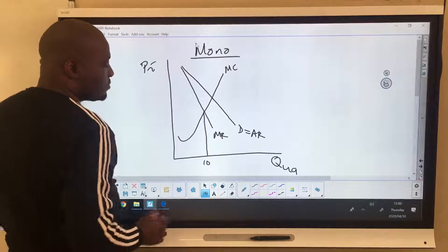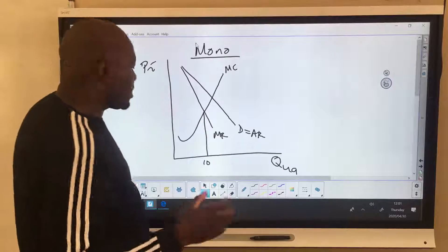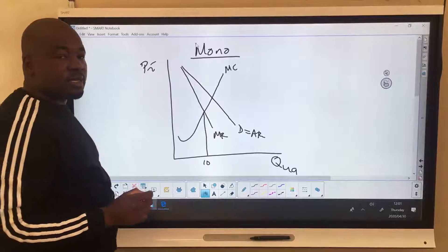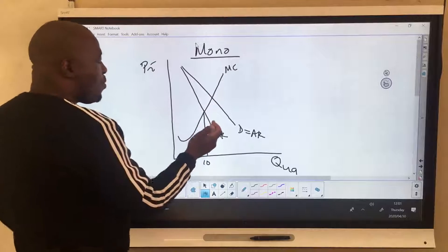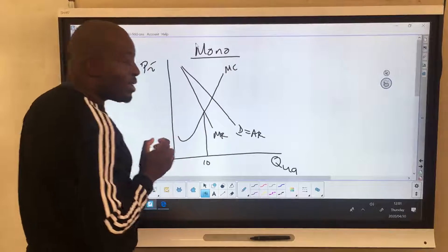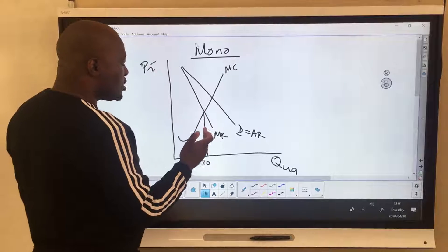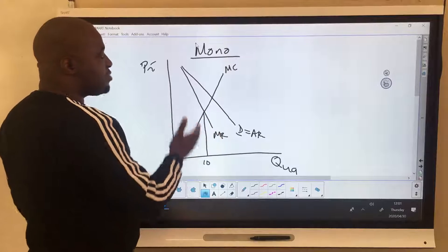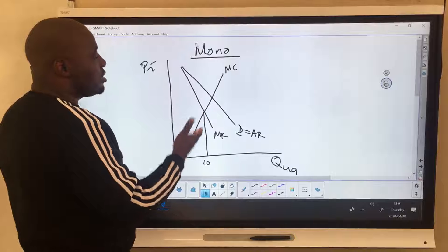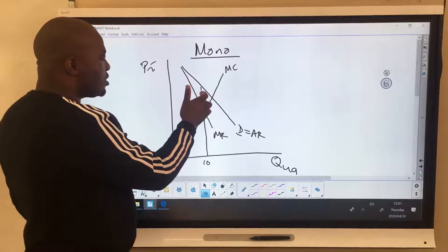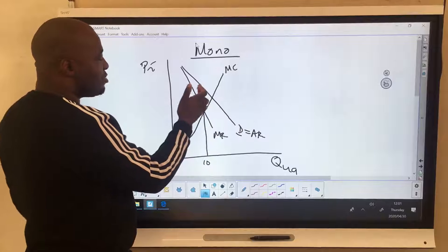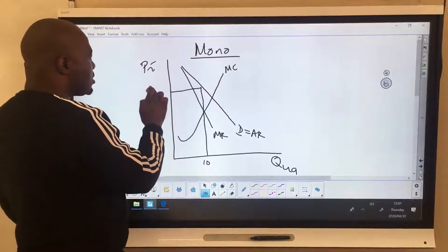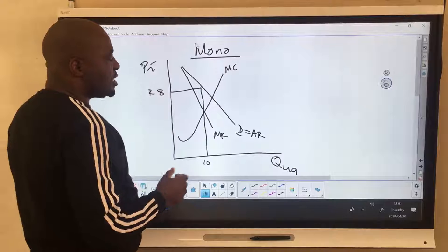So let's say 10. Now, many learners make this mistake. When they draw, when they meet the profit maximizing point, they then say this is the price, which is a big mistake. So where is our price? Price is determined by demand. So we have to continue with our line. And in most cases, this line should be a dotted line. So I have to continue my line until I touch the demand curve. And so this becomes the price for whatever it is that the monopoly is producing. So I'll say maybe 8 rands.